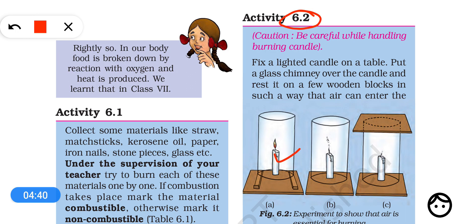In this activity, we take a candle and place a glass chimney that is open from both the top and bottom. In the first case, the chimney rests on wooden sticks, so air can enter from below and from above. Because air is available, the candle keeps burning. In the second case, the chimney rests directly on the bottom with no gap for air to enter, so there is only a partial supply of oxygen. In that case, the candle flickers and produces smoke.